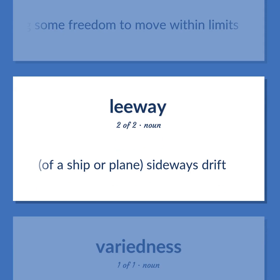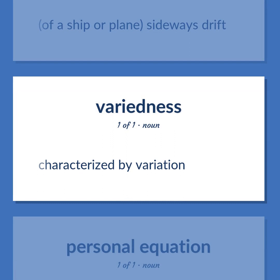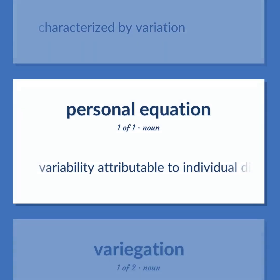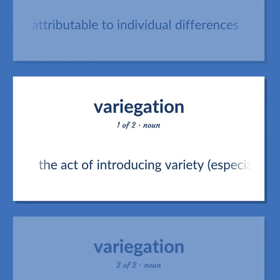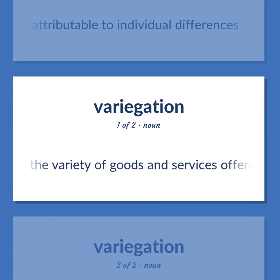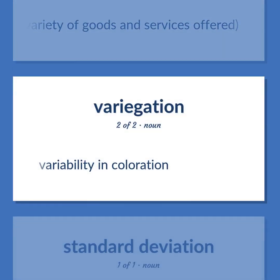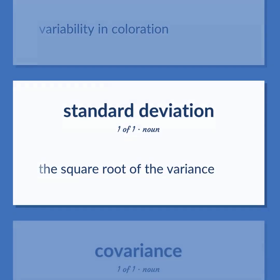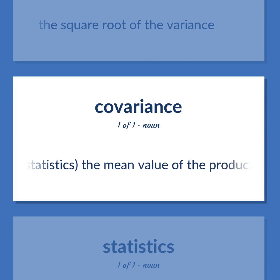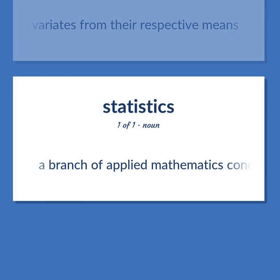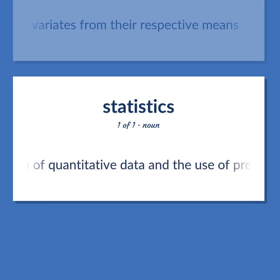Of a ship or plane: sideways drift. Characterized by variation. Variability attributable to individual differences. The act of introducing variety, especially in investments or in the variety of goods and services offered. Variability in coloration. The square root of the variance. Statistics: the mean value of the product of the deviations of two variates from their respective means. A branch of applied mathematics concerned with the collection and interpretation of quantitative data and the use of probability theory to estimate population parameters.